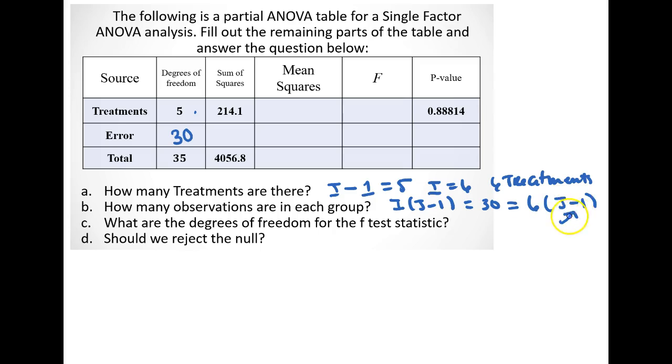So if this is equal to 5, that means that J is equal to 6 as well. So the number of observations in each group is equal to 6, and so the total number of observations would be equal to 36.